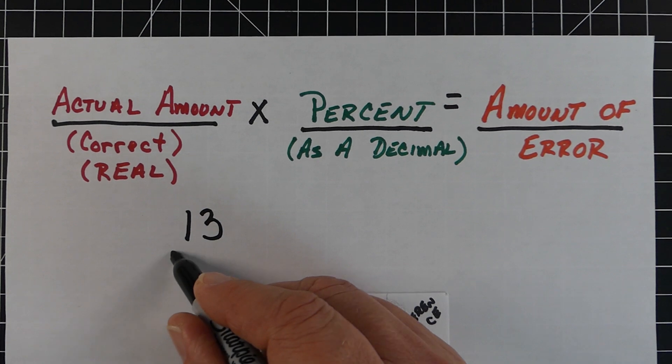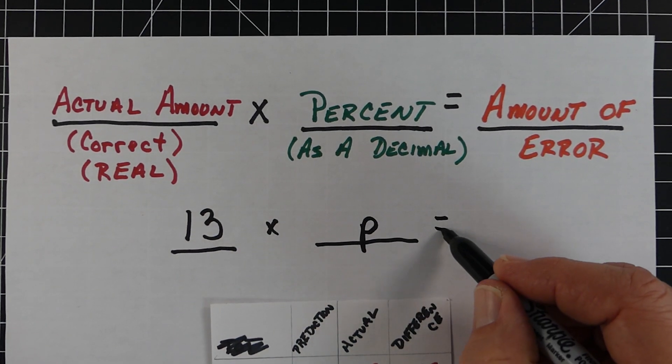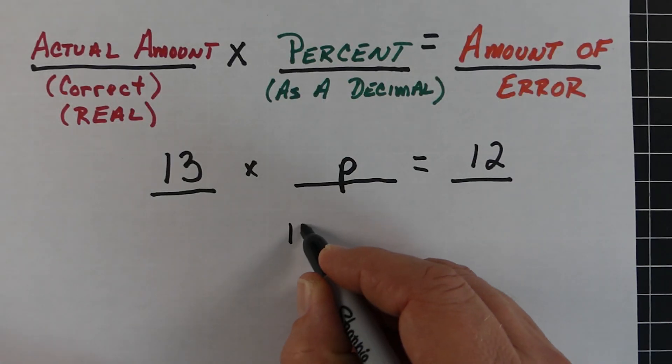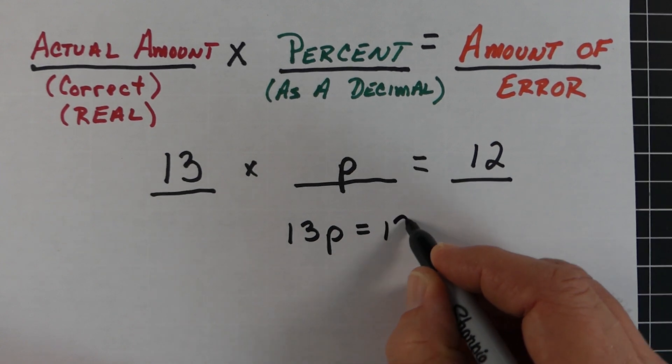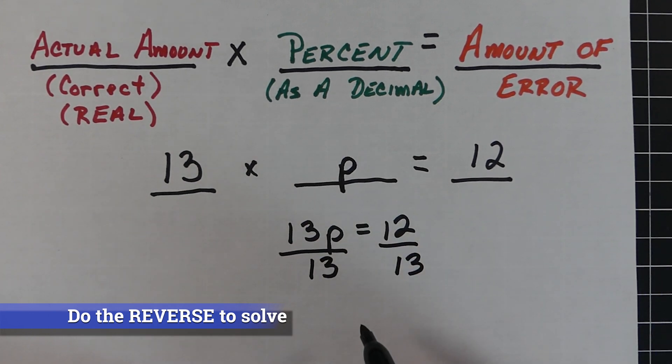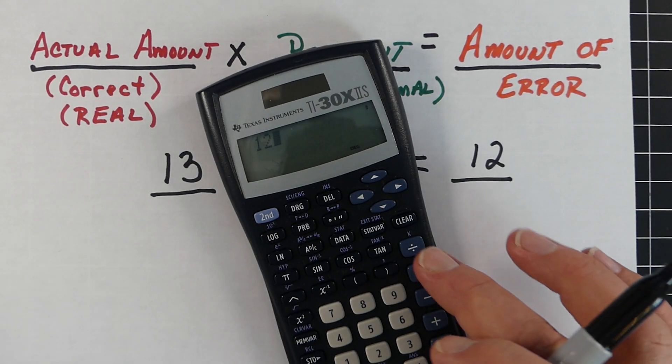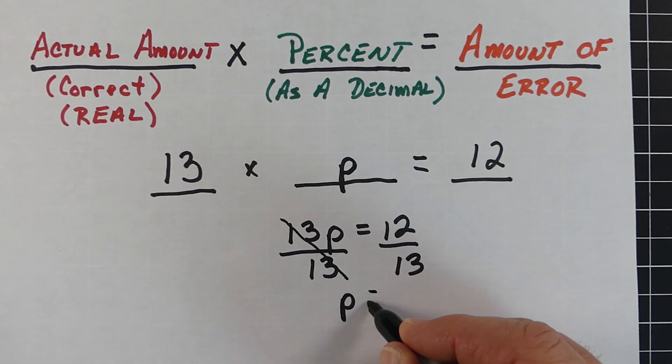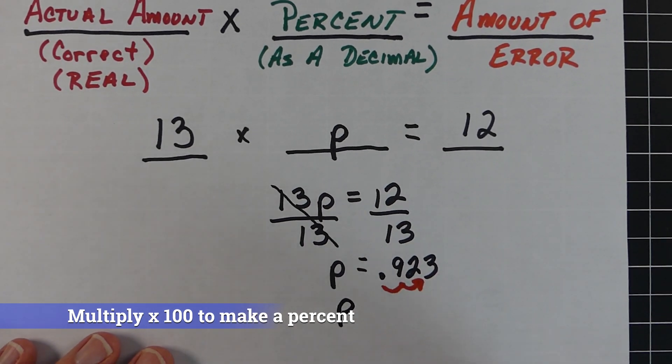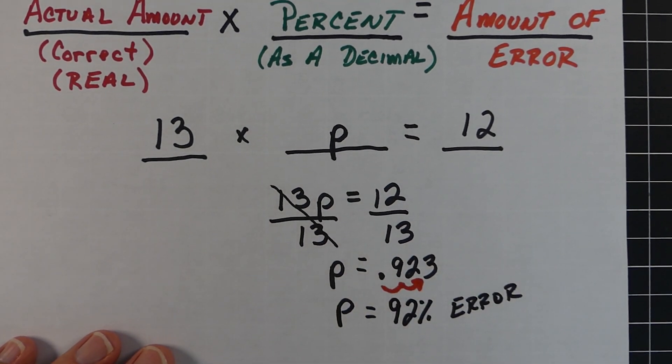For yellow, the actual amount I had was 13. I don't know the percent yet, that's what we'll find, but the amount of error was 12. So we have a one-step equation: 13p equals 12. We'll do the reverse to solve - divide both sides by 13. On the left just the variable, on the right 12 divided by 13. Using my calculator I get 0.923. We multiply this decimal by 100 to find a percent - the decimal moves two places right. This was a 92% error.